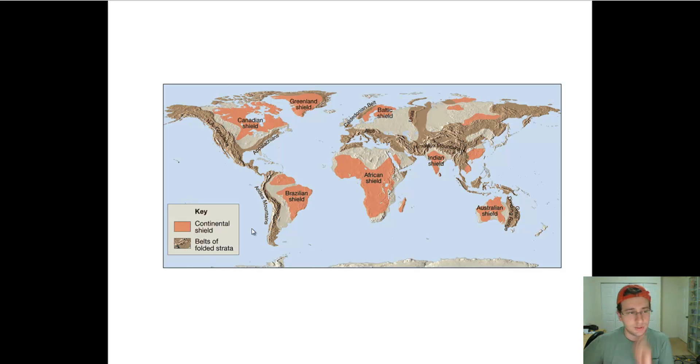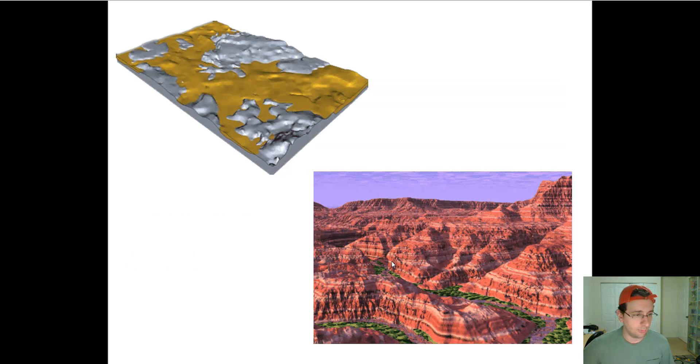These folds in the surface of the Earth are another structure that is common in continents. Another one is platforms. Whenever these mountain ranges erode or when shields erode or when material comes from the seafloor carried by waves, sedimentation gathers around shields and cratons.